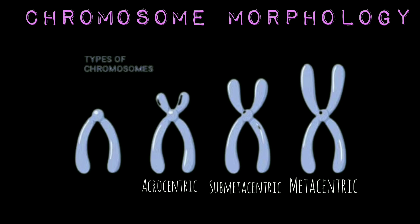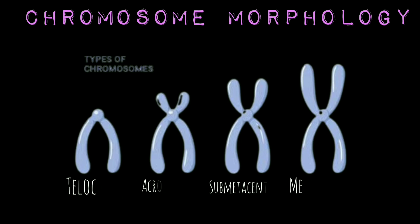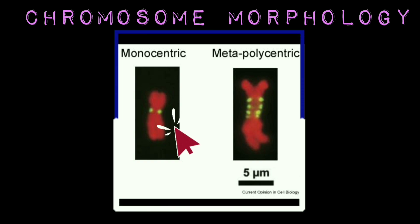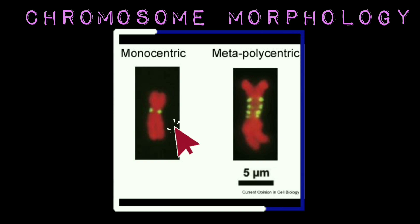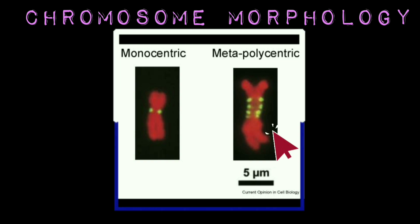In telocentric chromosomes, the centromere appears to be located at one end of the chromosome; such centromeres are called terminal, and these chromosomes appear rod-shaped during anaphase. In most species, each chromosome has a single centromere and is termed monocentric. But in some species, such as Luzula, each chromosome has more than one centromere; such chromosomes are called polycentric.